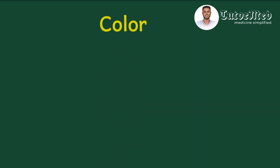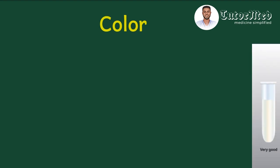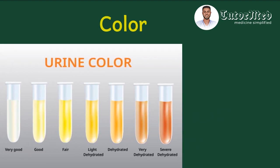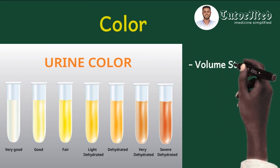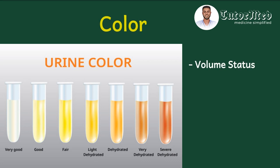Normal urine color is anything from clear to amber or straw. Urine color has a relationship with a patient's volume status. As demonstrated in this picture, a very well-hydrated patient has very light or clear urine, while a severely dehydrated patient has very concentrated, dark urine. Now, for pathological urine color changes, we will evaluate them using the Three M's.